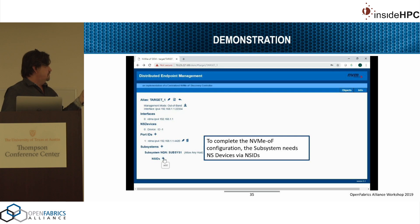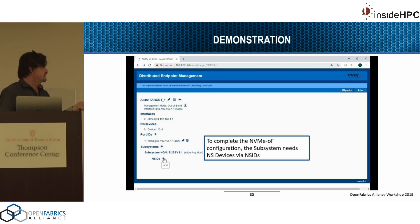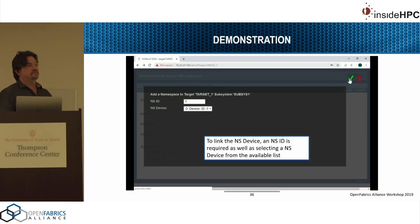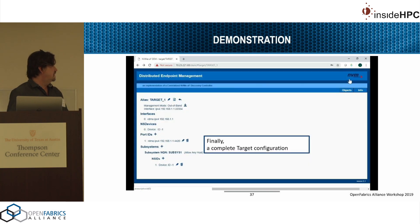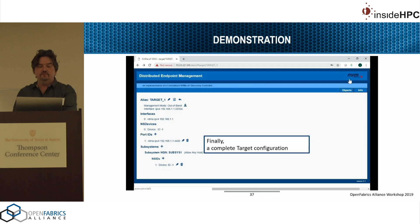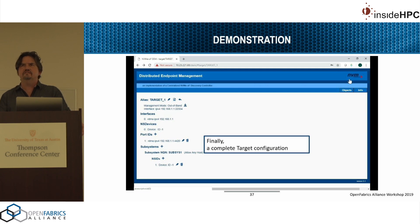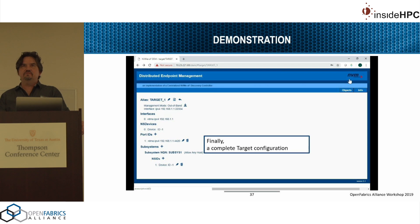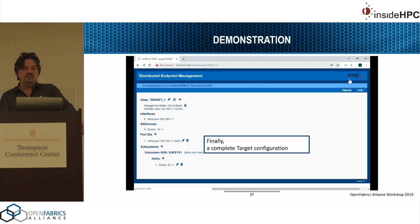Now you assign an NVMe namespace device to the subsystem you've created. Since the DEM already knows what devices are on that target, you can select which device to use. Once done, you have a complete target configuration. You can do this for as many subsystems and as many targets as you want. We've simulated around 2,500 targets and hundreds of hosts — it's quite stable and certainly much easier than going to each individual target, especially when adding, removing, or changing fabric infrastructure.